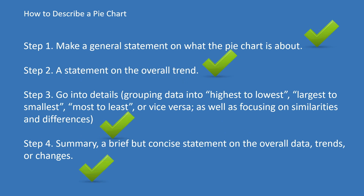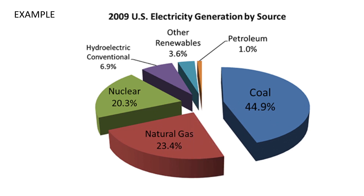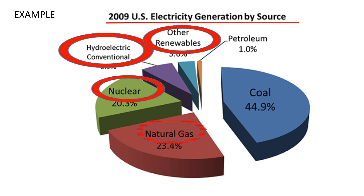Let's now proceed to the main lesson. The steps in describing a pie chart are similar to a bar graph. Once again, take a moment to please read the following steps. So let's take this pie chart as an example. Before you begin writing — before you start with step one — the most essential thing to do first is to examine your pie chart: take a look at the title, the categories, and the values provided.